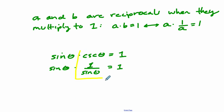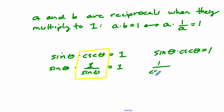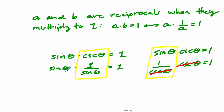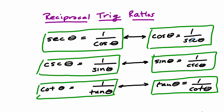Therefore it must be true that the cosecant is one over the sine of theta. But you can also view it the other way: since sine of theta times cosecant of theta equals one, the sine of theta has to be one over the cosecant of theta. Because cosecant times one over cosecant gives you one — those cancel out. So these things are reciprocals not just in one direction but in both ways. I can always test this: secant times cosine gives one, because one over cosine times cosine is one. That's a little overview of the definitions.